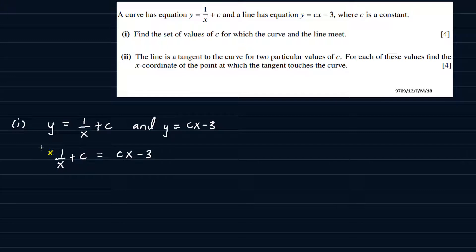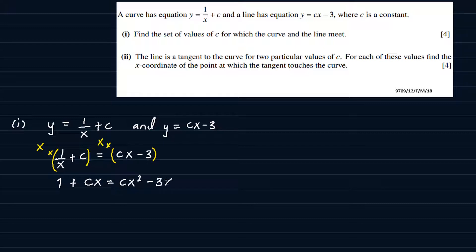I'm going to multiply both sides by x. So this side times x and this side times x. x times 1/x gives 1, and x times c gives cx. Then x times cx gives cx², and x times −3 gives −3x. From here, I'm going to subtract cx from both sides and subtract 1 from both sides so that we are left with 0 on the left side, giving −cx and −1 on the right.